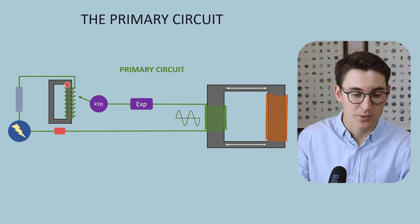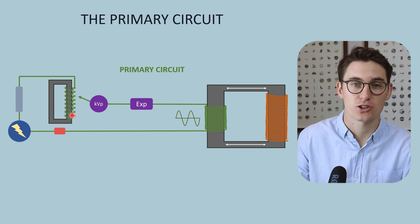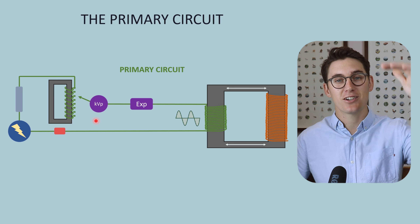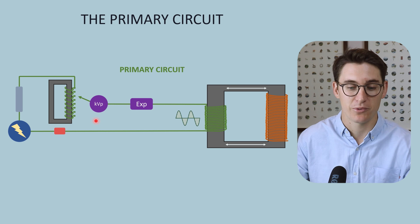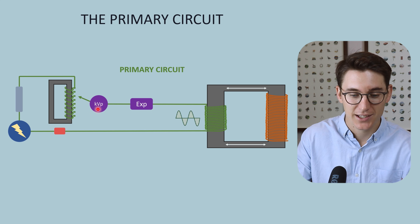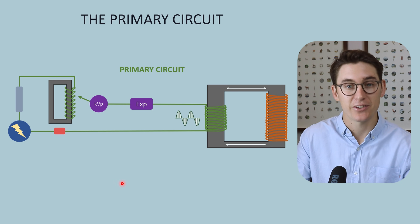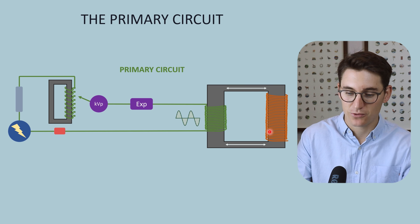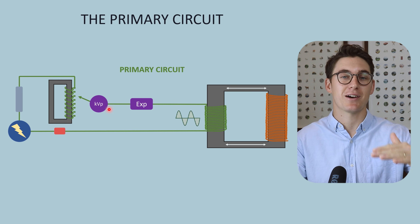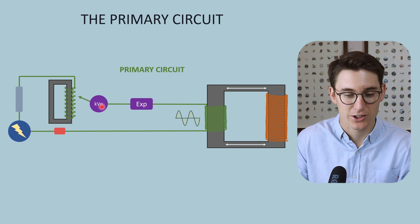After that, the current enters what's known as an auto transformer. The auto transformer is a single-coiled transformer that allows us to select our kVp — to vary the voltage going into the primary circuit. You'll notice it's labeled kVp even though we're dealing with volts, not kilovolts. The dial on our machine displays the kilovolts supplied to the x-ray tube, calculated for the step-up transformation. So although we're changing volts between about 100 and 400, the machine readout shows the kilovoltage delivered.